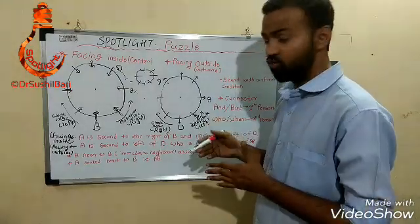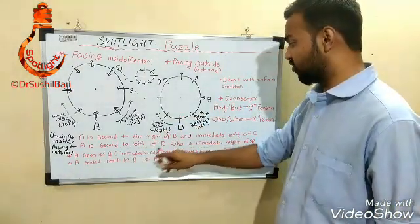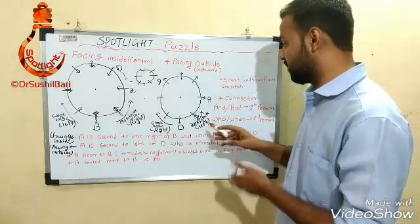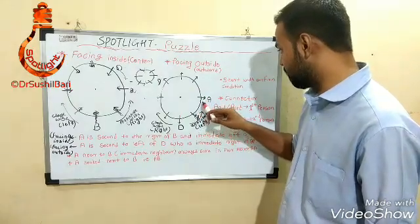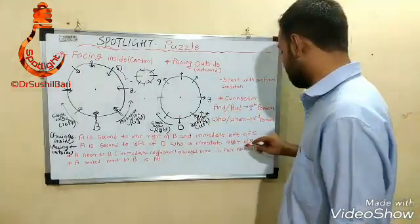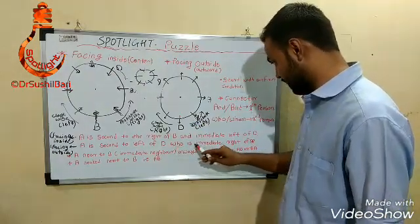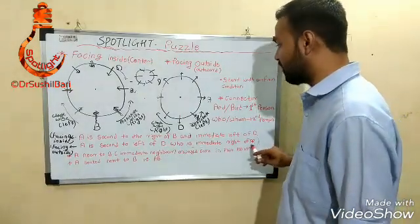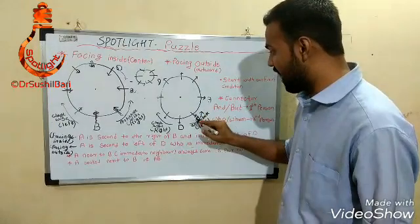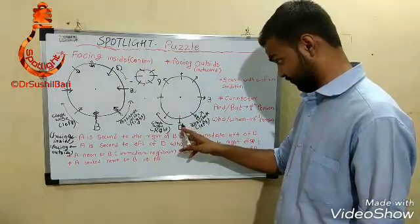For a facing outside example: 'A is second to the left of D. Who is the immediate right of X?' With D placed, facing outside means directions are reversed, so left is clockwise — A is two positions clockwise from D. The connector 'who' refers to the second person, D, so D is the immediate right of X. Facing outside, right is clockwise, so X is placed immediately counter-clockwise from D.